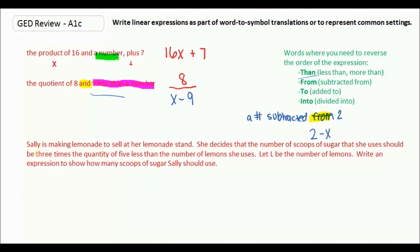Let's start from the beginning: 3 times. When you see 'the quantity,' that means you need to put it in parentheses. And then 5 less than the number of lemons. Well, we don't know the number of lemons, that's our L. The 'than' tells us we need to reverse, so instead of 5 minus L, we're going to do L minus 5. And that is the expression that tells you how many scoops of sugar to use.